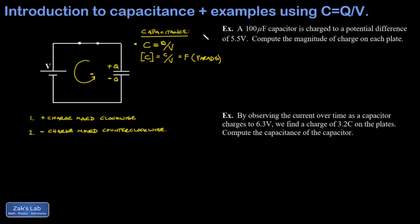Let's look at a couple simple examples. In the first example, we have a 100 microfarad capacitor charged to a potential difference of 5.5 volts. And I want to compute the magnitude of the charge on each plate. That's the Q from the formula. So if I want the Q from the formula, let's just turn the formula around and write Q equals CV.